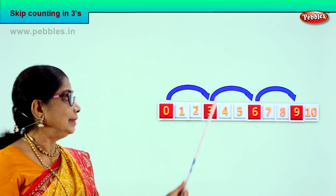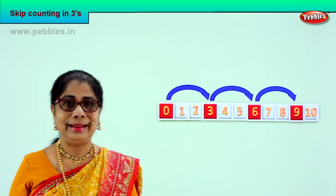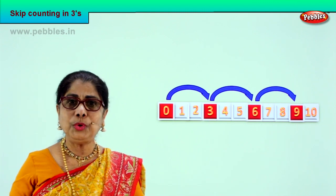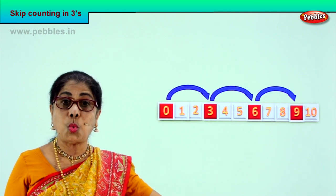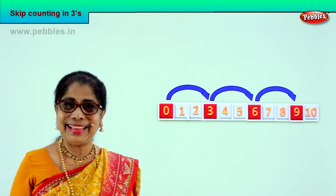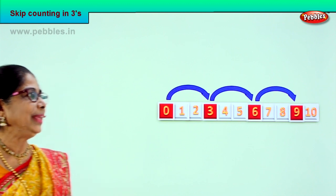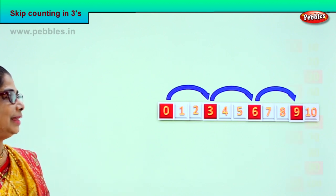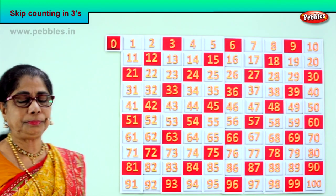3, 6, 9. Now we are going to look at the full picture from 0 to 100. Yes, keep counting in threes. Good. Let's look at the full picture.